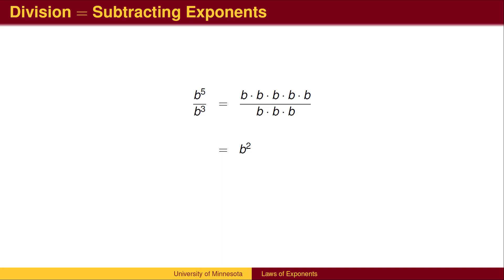When we divide powers, we cancel. In this case, b squared remains. We can achieve the same result by subtracting exponents. The b cubed in the denominator removes 3 of the 5 b's from the numerator, leaving 2.